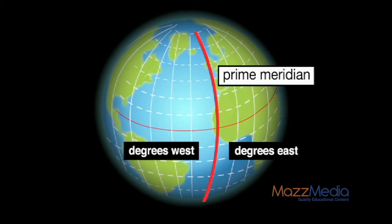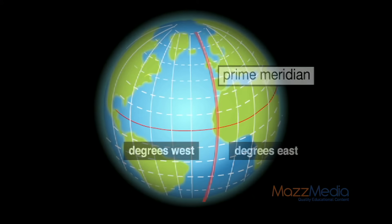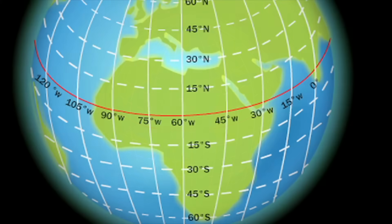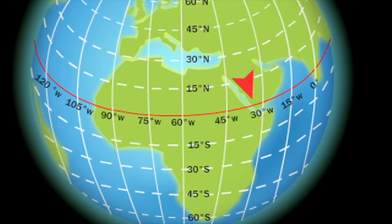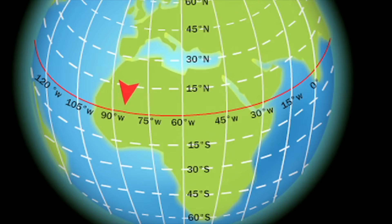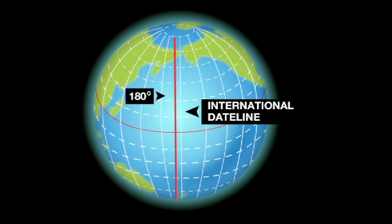On most globes, if you start going any direction from the prime meridian, you will see that each line of longitude is marked in fifteen degree sections — so fifteen degrees east, then thirty degrees east, and so on — until we reach one hundred and eighty degrees, which is the exact opposite side of the globe from the prime meridian. This spot, exactly opposite the prime meridian, is called the international dateline.